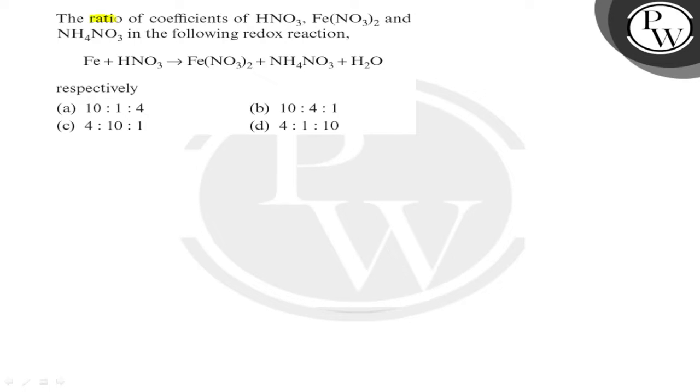Hello, let us see the question. The ratio of coefficients of HNO3, ferrous nitrate and ammonium nitrate in the following redox reaction is: iron plus HNO3 turning to ferrous nitrate, ammonium nitrate and water.